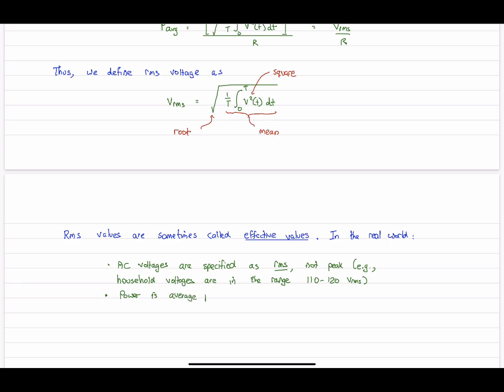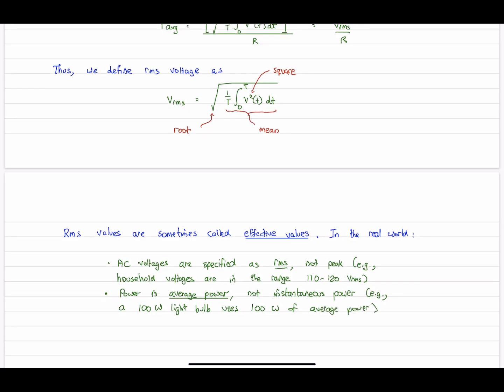And the other thing, too, power. When we talk about power in the AC circuit, such as a 100 watt light bulb that we might screw into a socket, it is average power, not instantaneous power. So when we have a rating on a light bulb of 100 watts, it's referring to 100 watts of average power.